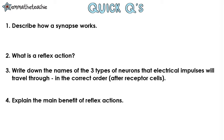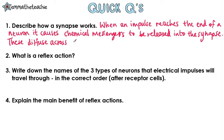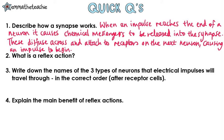Describe how a synapse works. When an electrical impulse reaches the end of one neuron, chemical messengers are released into the synapse and diffuse across the gap. When they reach the receptors on the next neuron, they cause an electrical impulse to begin.